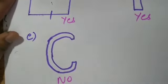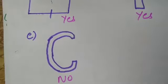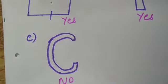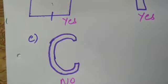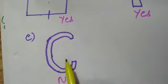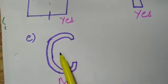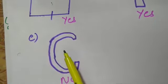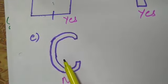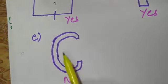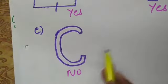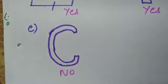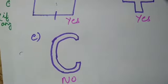Come to part E. Part E we have is the English alphabet C, and we have to find either this figure has rotational symmetry of order more than 1 or not. On rotating it through the center, at no angle will this figure be same as the original one. So this figure does not have rotational symmetry of order more than 1. This is all about the solution part of the assignment.